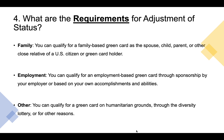What are the requirements for adjustment of status? To use AOS, you must be eligible for a green card in one of the following categories. First, family: you can qualify for a family-based green card as the spouse, child, parent, or other close relative of a U.S. citizen or a green card holder. Second, employment: you can qualify for an employment-based green card through sponsorship by your employer or based on your accomplishments and abilities. Third, other: you can qualify for a green card on humanitarian grounds, through the diversity lottery, or for other reasons.